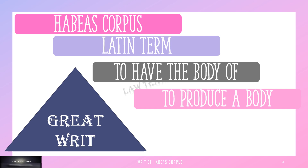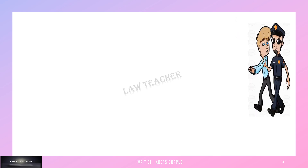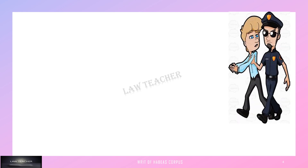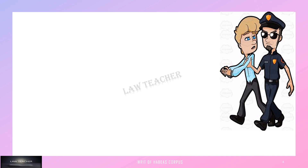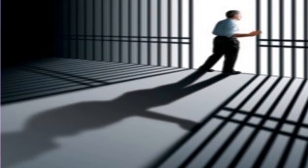That means, suppose if the state illegally detains a person, then such an individual by himself or through his relatives or friends can use the writ of habeas corpus for the release of that person. Whenever this writ is used, the Supreme Court or High Court asks the detaining authority on what basis the person was detained. And if the courts find the detention to be unreasonable, then the detention ends and the person is to be released with immediate effect.